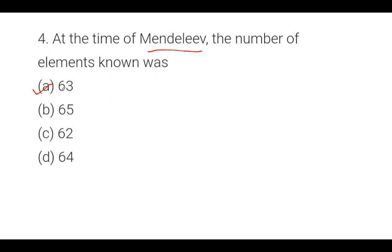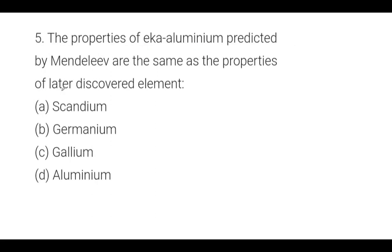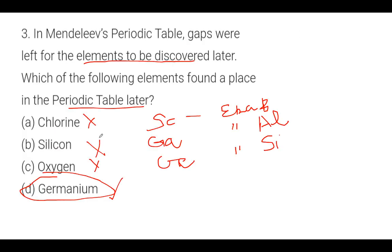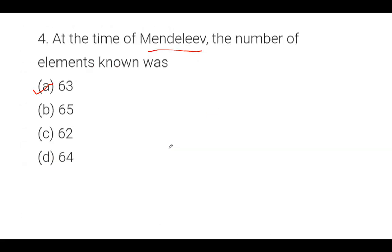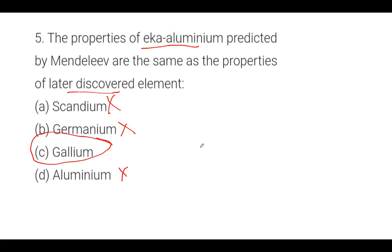Next question: The properties of Eka-aluminium predicted by Mendeleev are the same as the properties of which later discovered element? Options are Scandium, Germanium, Gallium, or Aluminium. The properties of Eka-aluminium predicted by Mendeleev are the same as the properties of Gallium. So our answer is C, Gallium.